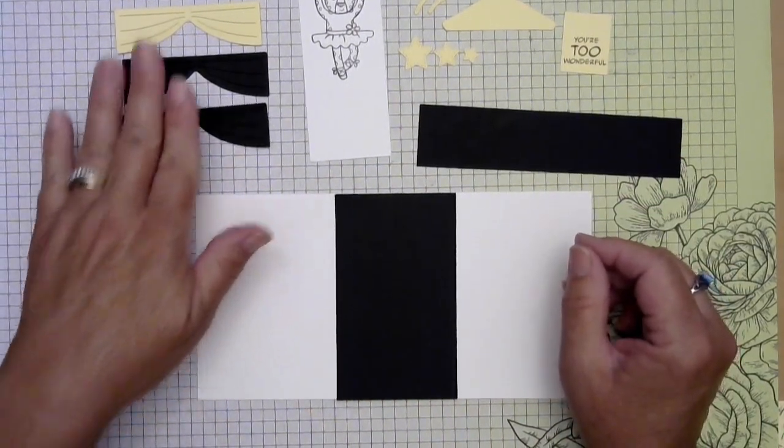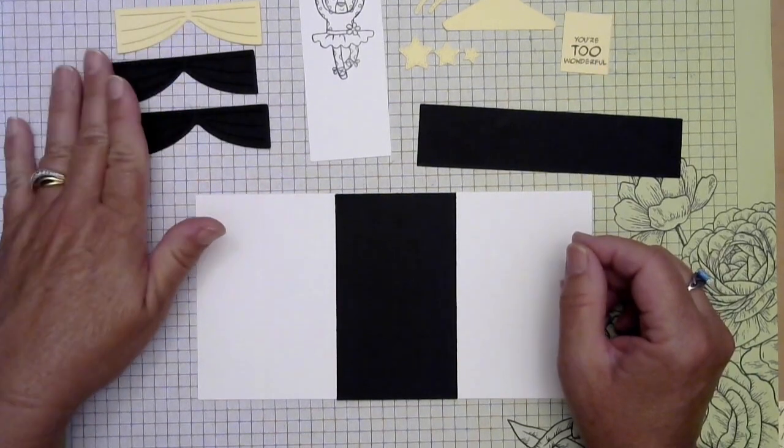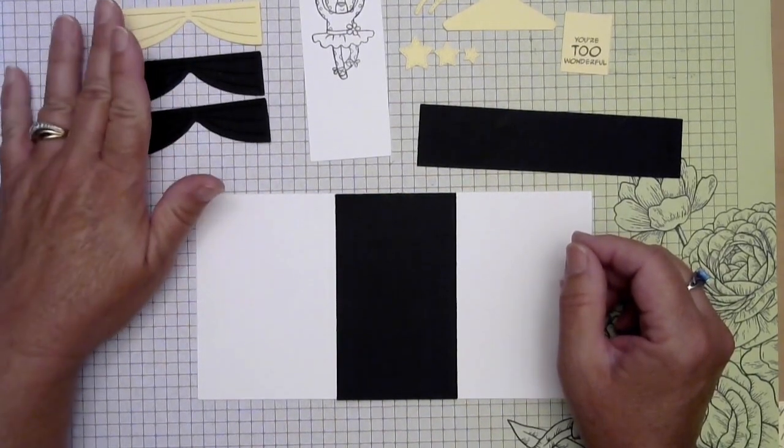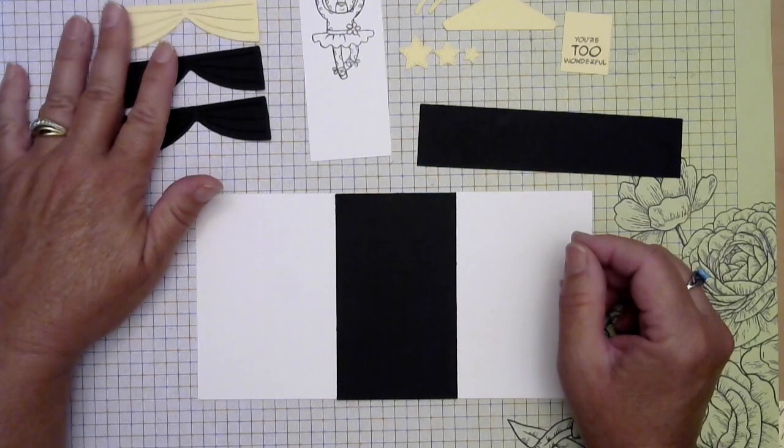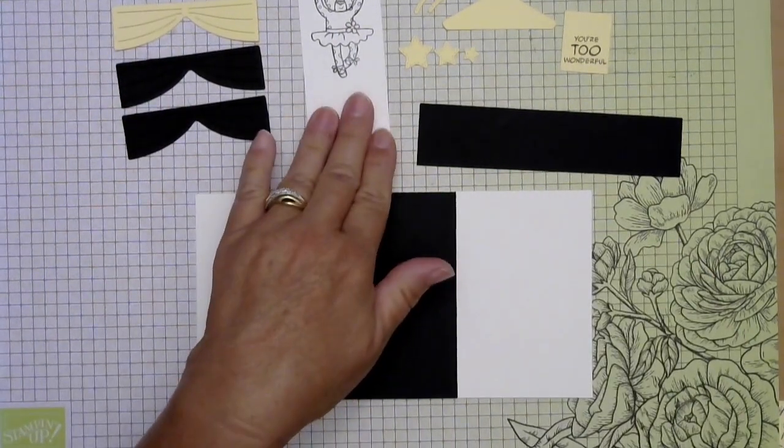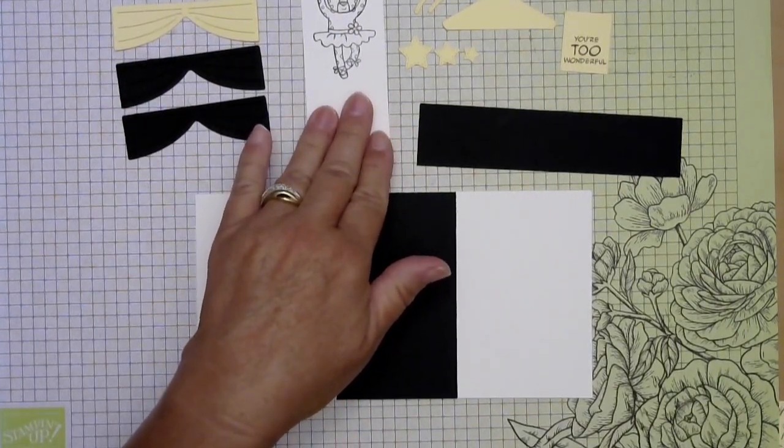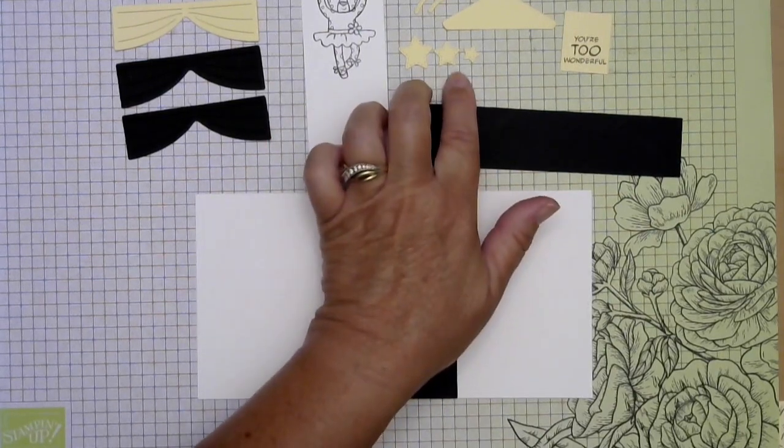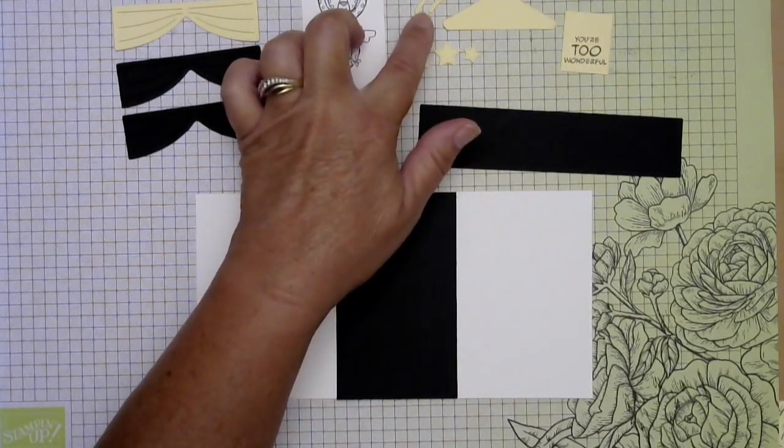We need three of the die cut curtains, two in black, one in lemon lolly. Then we need a piece of white for stamping our little leopard. We need three stars, two curtain tie backs.